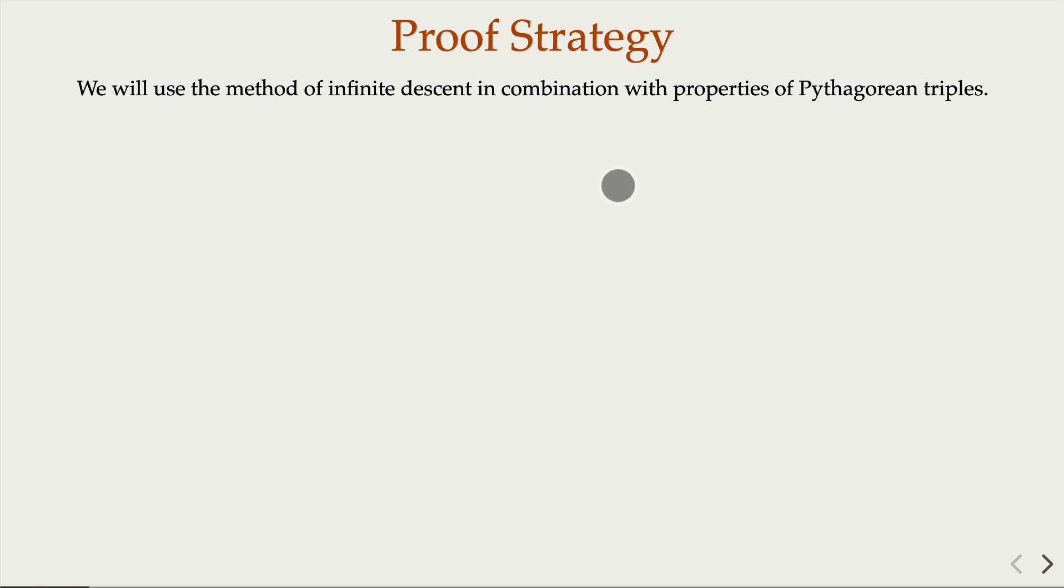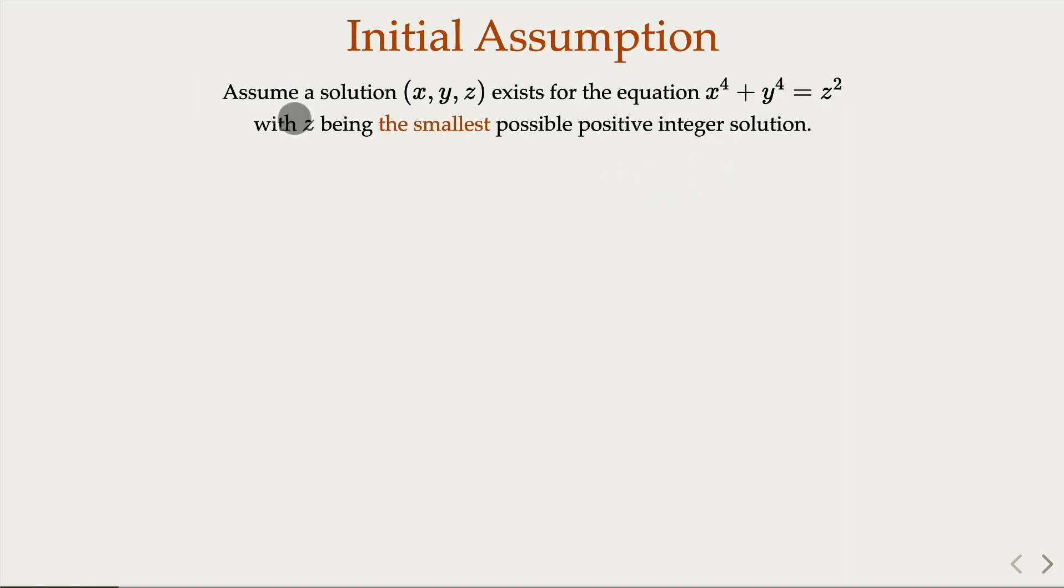Now the proof here is based on some properties of Pythagorean triples. The key idea is that we are saying there are solutions x, y, z, and among those solutions, let's choose the one with the smallest z. This pair x, y, z with the smallest z.